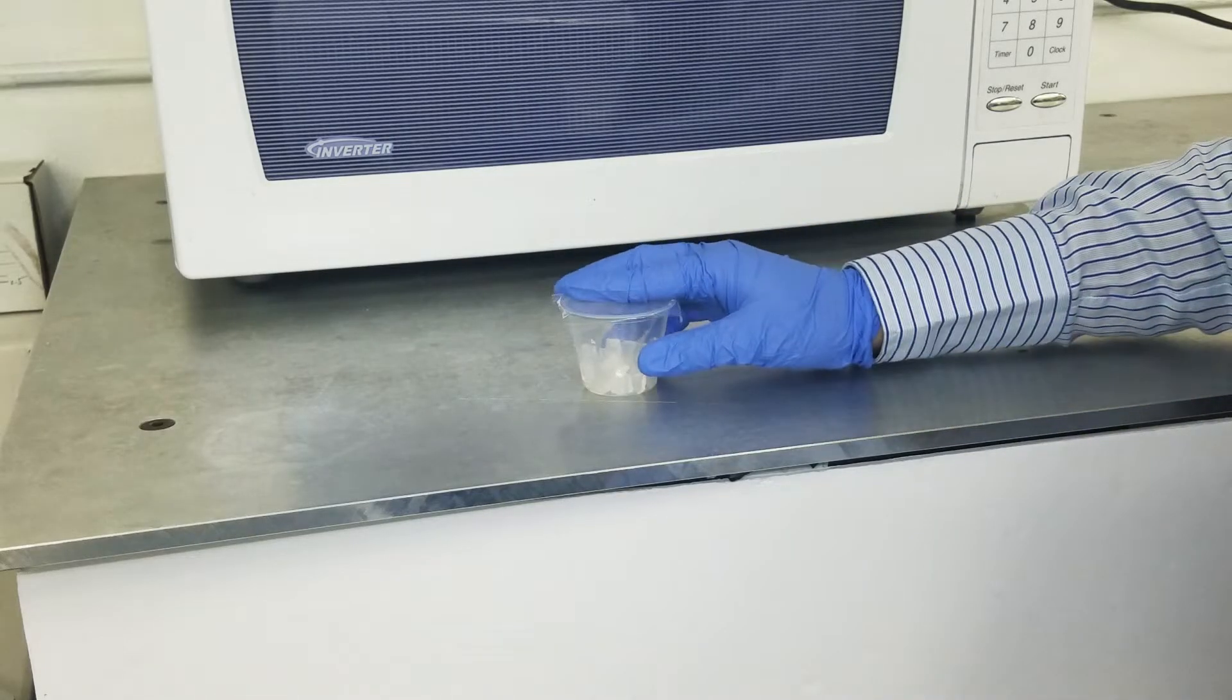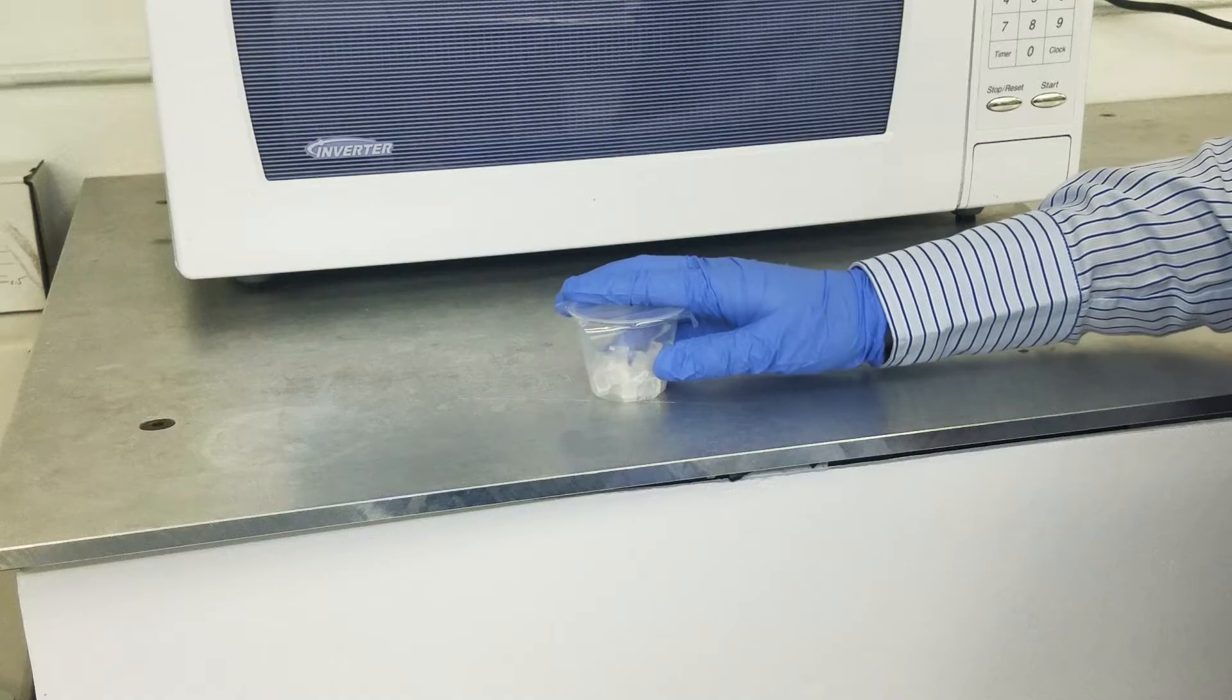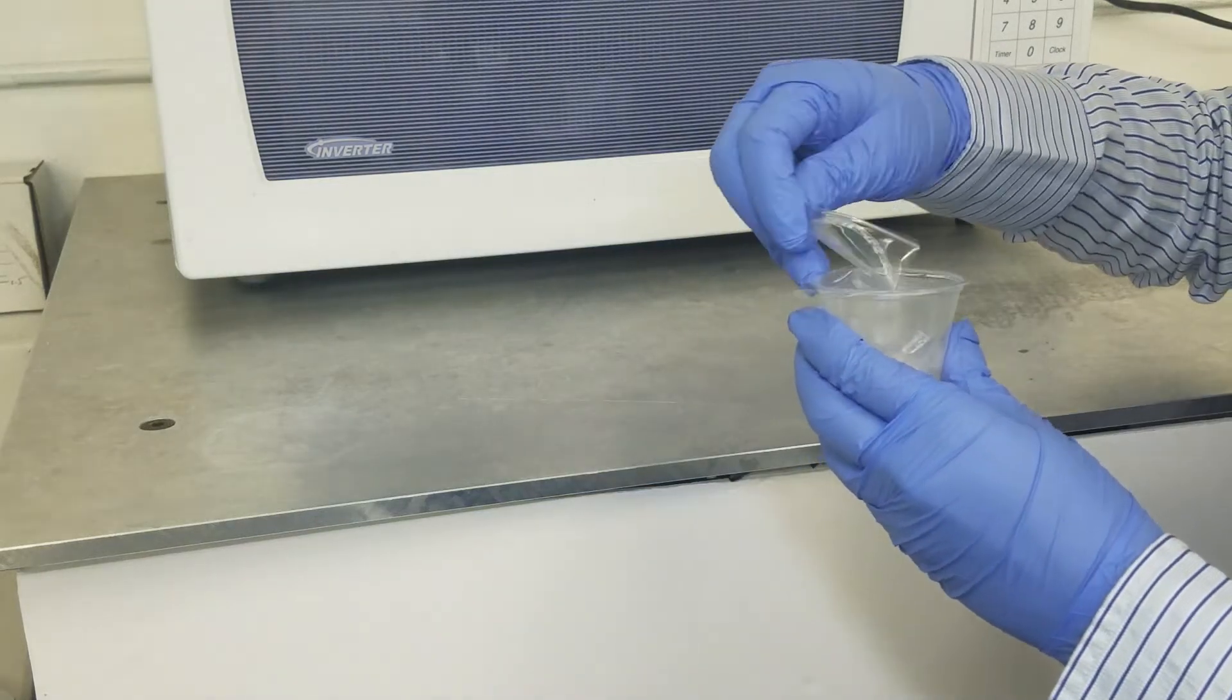Take your gel cup and tap or knock all the agarose chunks to the bottom. Partially peel back the lid. It is important not to leave the cup sealed as sealed cups can explode in the microwave.